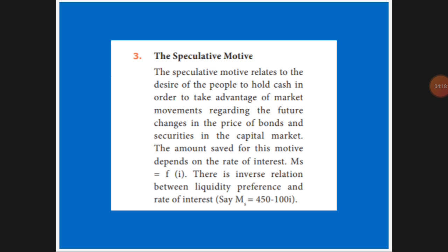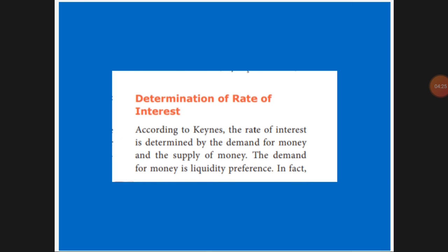So if the interest rate is more, liquidity is less, and vice versa. According to Keynes, the rate of interest is determined by the demand for money and supply of money. If money supply is more, the interest rate will automatically reduce. If money supply is less, the interest rate will be more. The supply of money is determined by government policy, which in turn depends on national income.